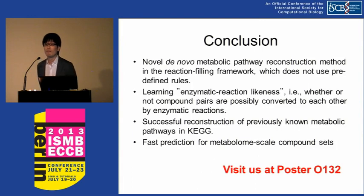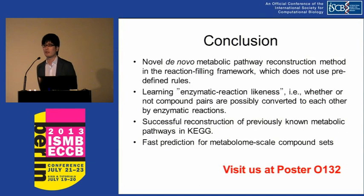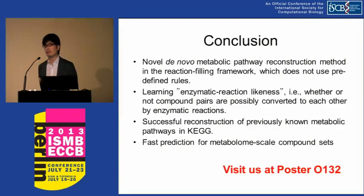You consider compound pairs — what about taking into account several substrates? We only considered a pair of compounds, so the existence of cofactors or some other factors is not considered. In that case, we just intended to make a template pathway. We need to define more to consider some other factors, and it could probably be extended to consider more, right? Yes, I think so.